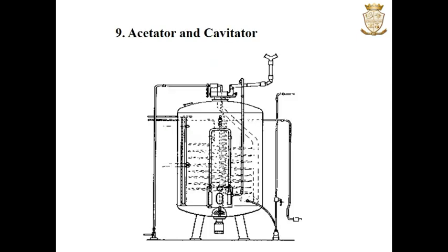The next type of bioreactor is the acetator and cavitator. These are generally used for the production of vinegar. Acetators operate in a semi-batch mode and cavitators work in a continuous mode. The difference between them is in the mechanics of their operation. Aeration in the acetator is by a rotating ceramic disc over an air nozzle which produces finely dispersed air bubbles, while in the cavitator, a nutrient liquid and air are sucked through a hollow tube extending from the liquid surface, forming air bubbles that result in aeration. The Frings generator is an acetator used in the manufacture of vinegar.